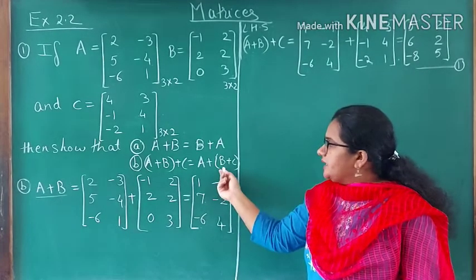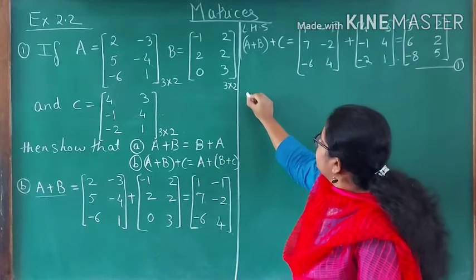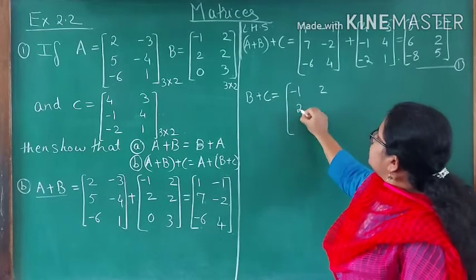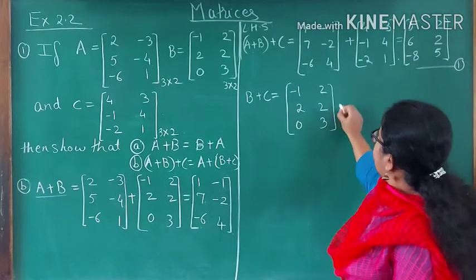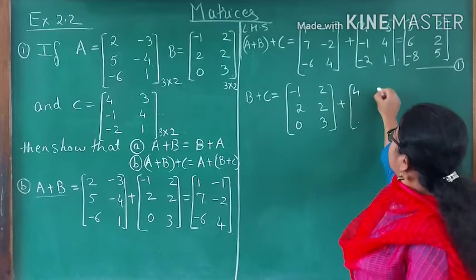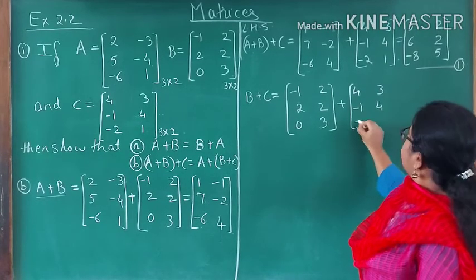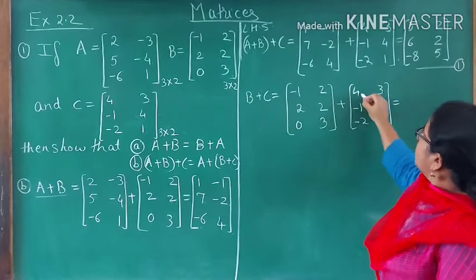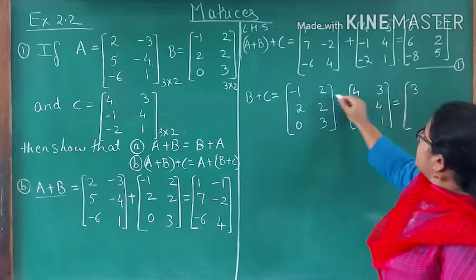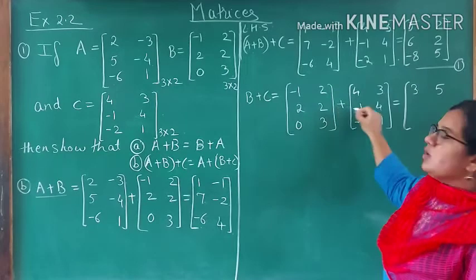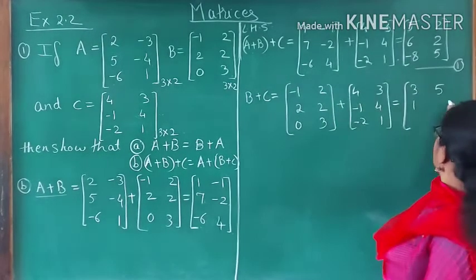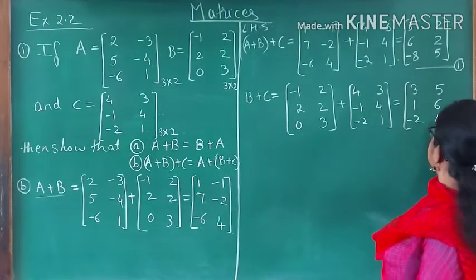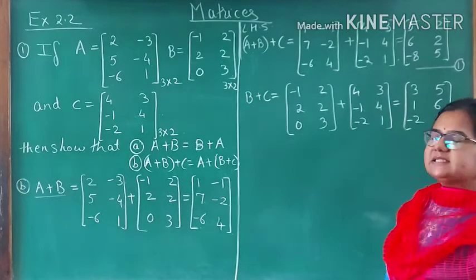Now for the RHS, the bracket is around B plus C, so first find B plus C. Matrix B: [-1, 2; 2, 2; 0, 3] plus matrix C: [4, 3; -1, 4; -2, 1]. Adding: -1+4=3, 2+3=5, 2+(-1)=1, 2+4=6, 0+(-2)=-2, and 3+1=4. So B plus C equals [3, 5; 1, 6; -2, 4].